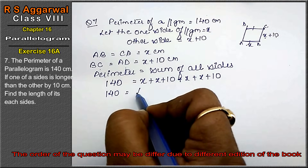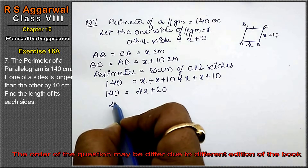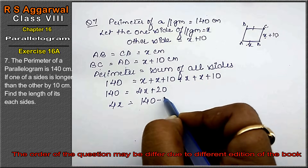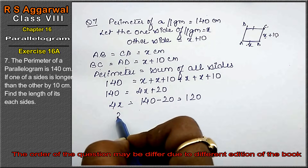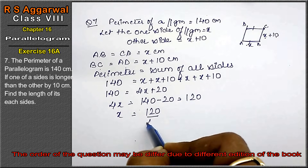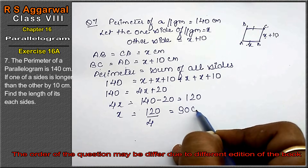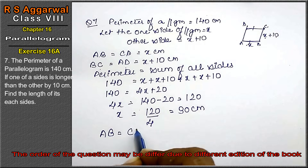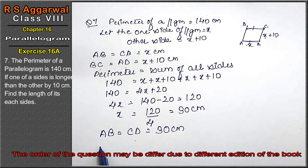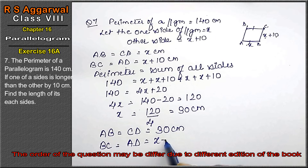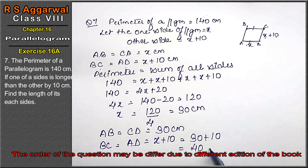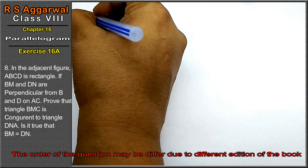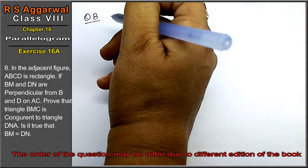Perimeter equals 140 equals x plus (x plus 10) plus x plus (x plus 10), which gives 4x plus 20 equals 140. So 4x equals 120, and x equals 30 cm. Therefore AB equals CD equals 30 cm, and BC equals AD equals 30 plus 10 equals 40 cm. That is the answer.